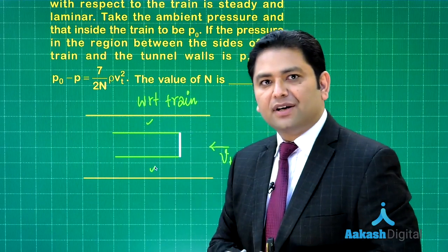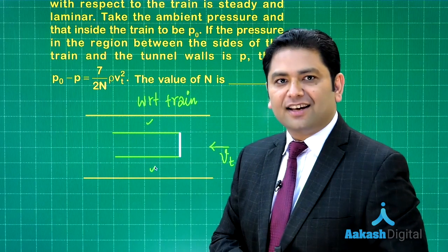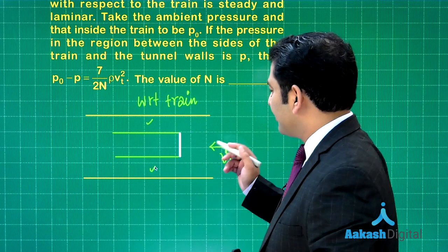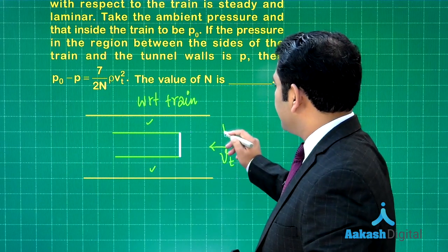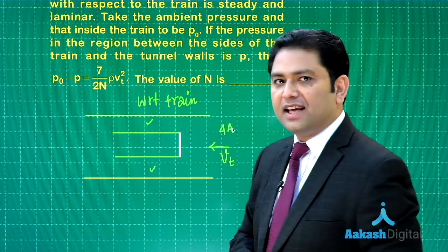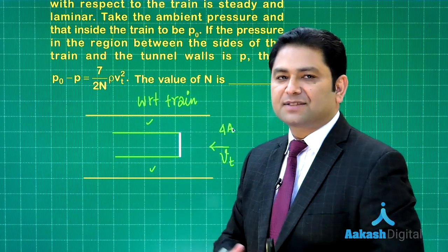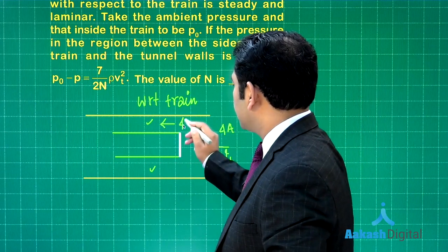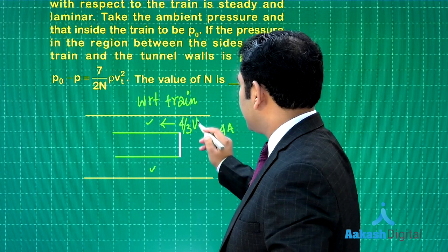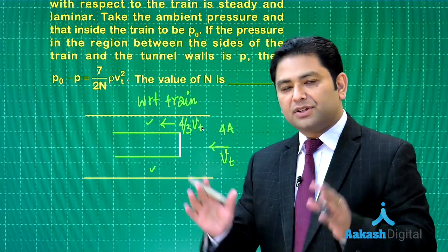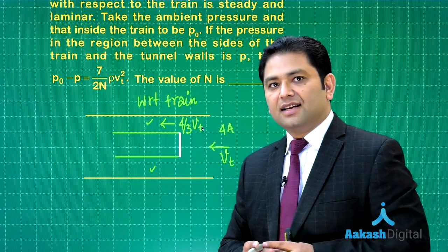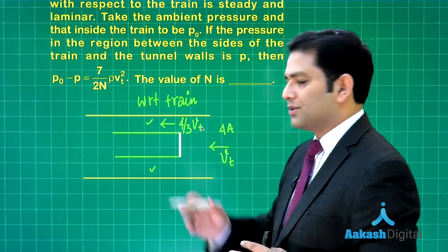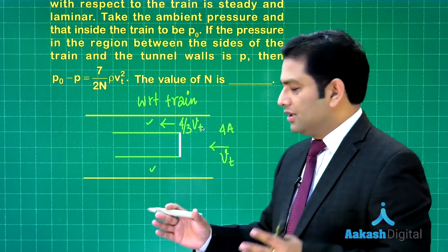If I say with respect to the train, I can remove this velocity. The air on this side will be moving with velocity vt. What about the air passing in this zone between the train and the tunnel walls? Straightforward continuity. This area plus this area totals 3A because the total is 4A minus the train's area A.